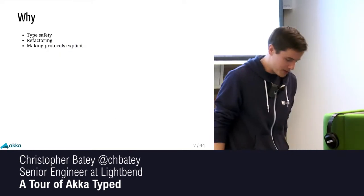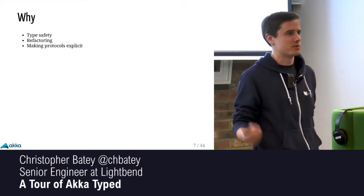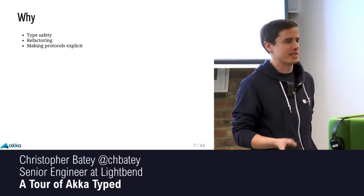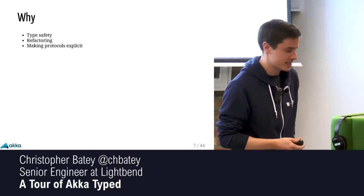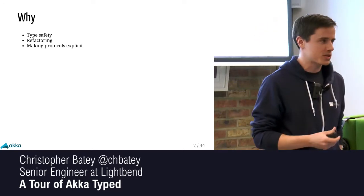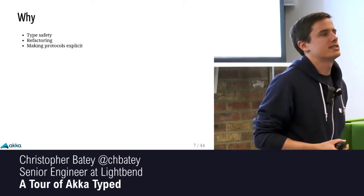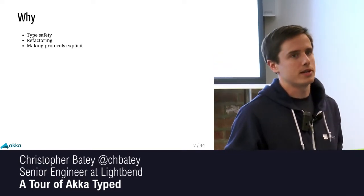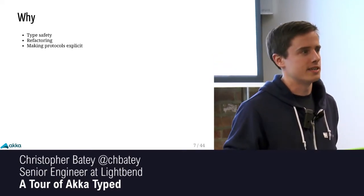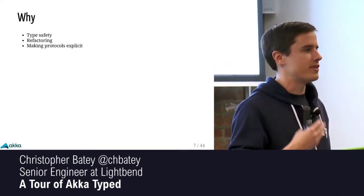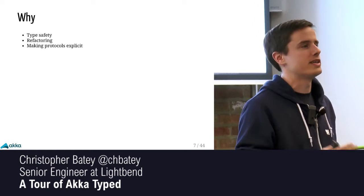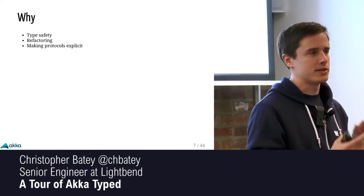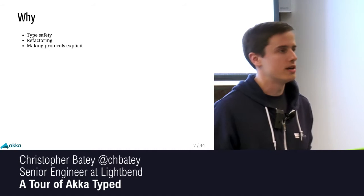So, why are we doing Akka Typed? Because we're in a statically typed programming language and it seems like a good idea — and it's pretty much what everyone complains about, but it's quite hard. Even over the last few months, when we thought the API was nearly done, we keep finding more and more bits where it's actually really hard to add types without introducing a huge amount of boilerplate.